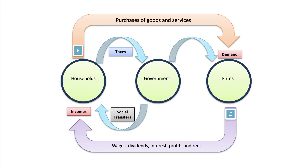Likewise, there are also flows from government to firms in the form of government purchases — spending by the armed forces on new weapons and machinery and armaments, or spending by the National Health Service on the payment of staff, drugs, and other resources used in providing health care. Governments can inject extra spending and extra demand into the circular flow through their own spending.